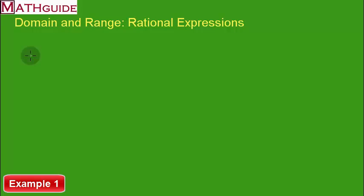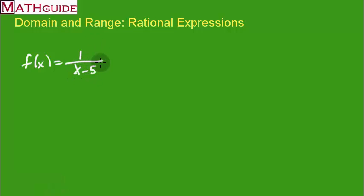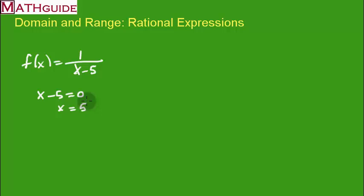Let's look at our first example: 1 over x minus 5. To find the asymptotes of these rational expressions, the first thing we do is take the denominator and set it equal to 0. If we solve and find a value that makes 0 in the denominator, this is a concern because the denominator can never equal 0 — that creates an undefined situation. So at x equals 5 we have an undefined situation, and that value is our vertical asymptote.